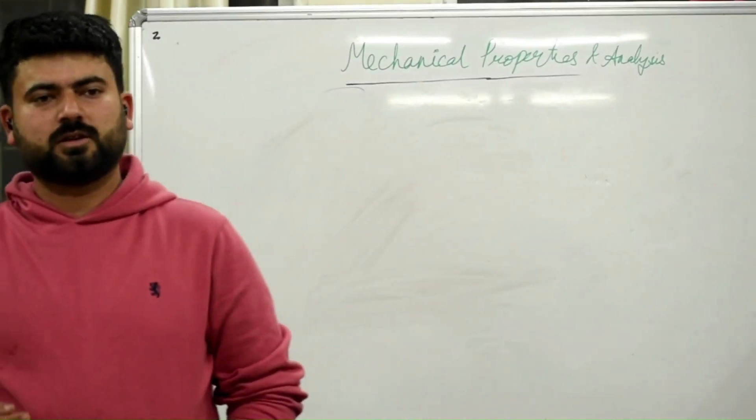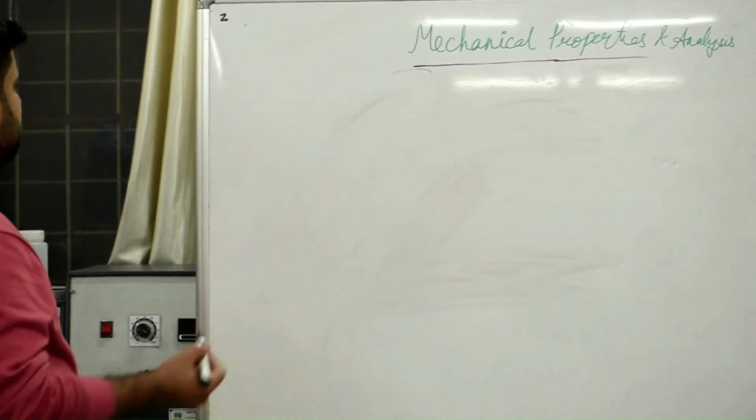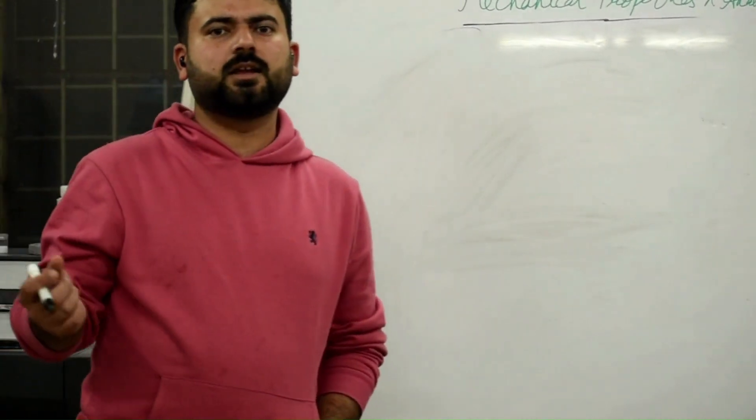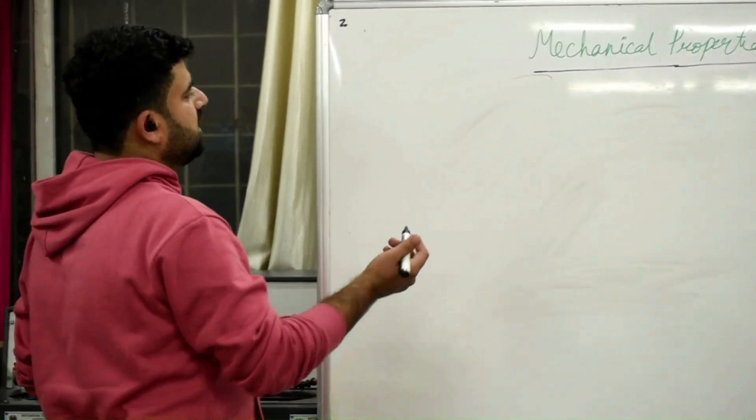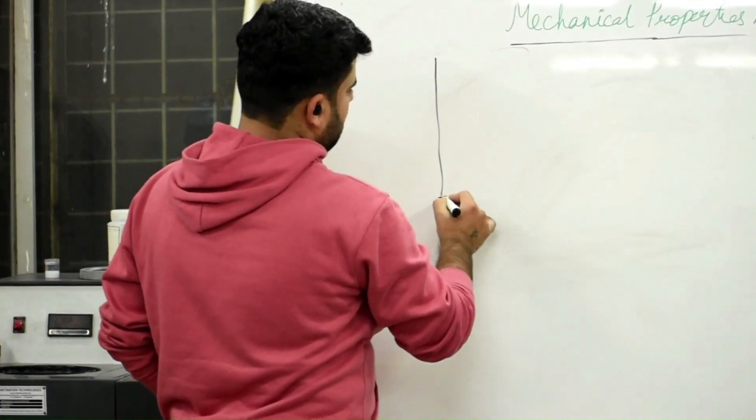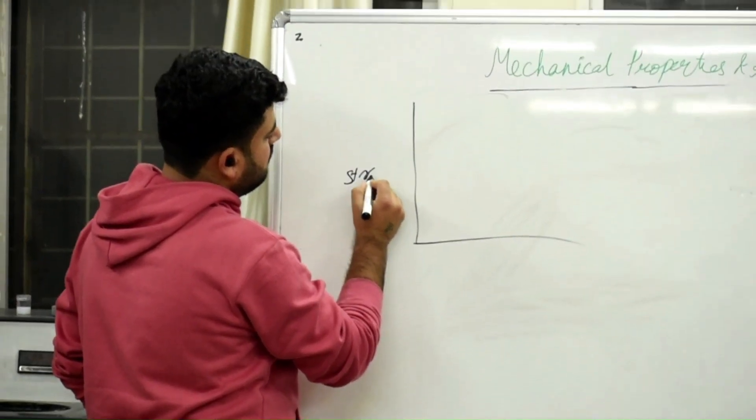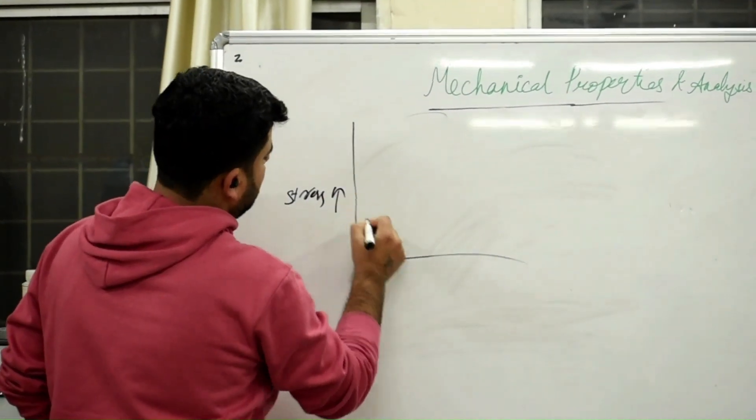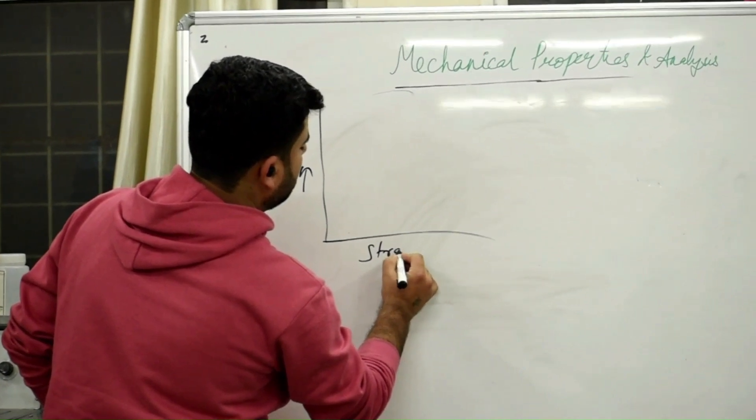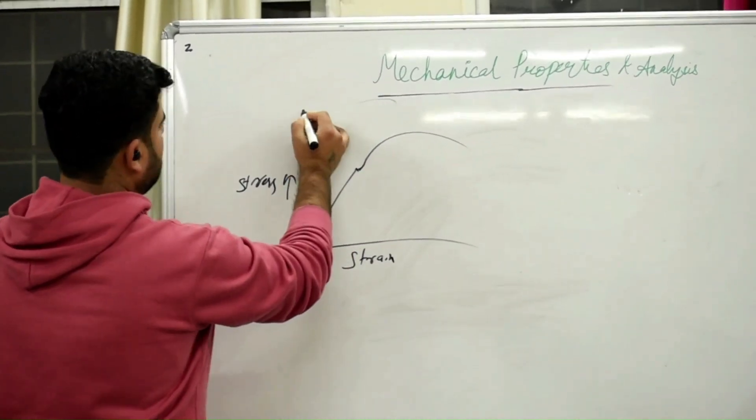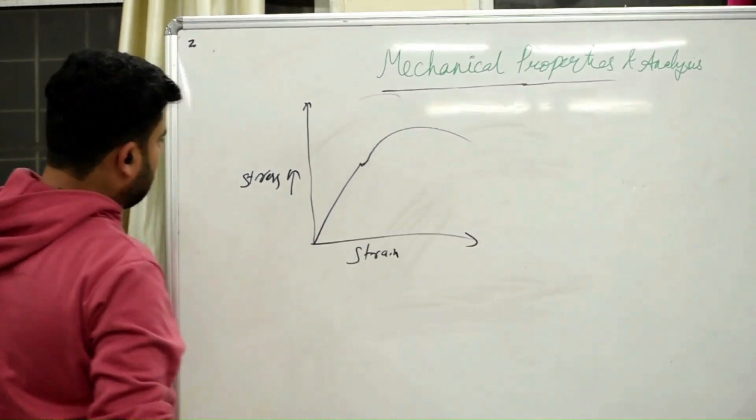As we have seen several methods to determine the Mechanical Properties, we will start with either Tensile or Compression. When we do Tensile or Compression Test, a graph is generated. That is the Stress and Strain Curve.